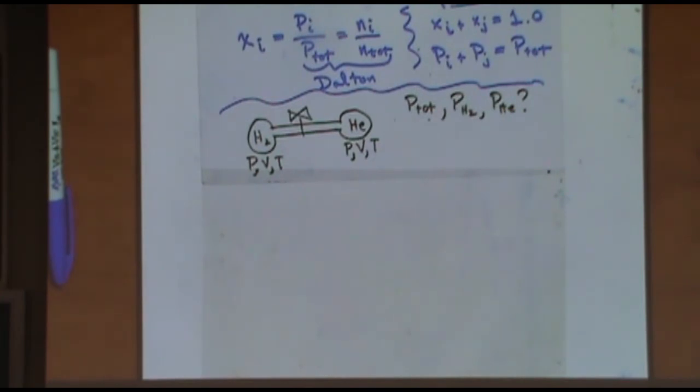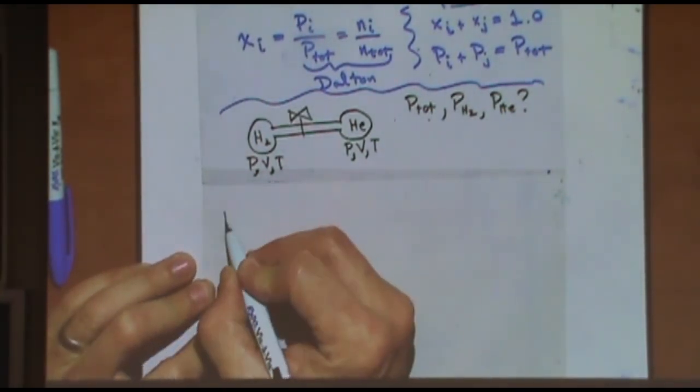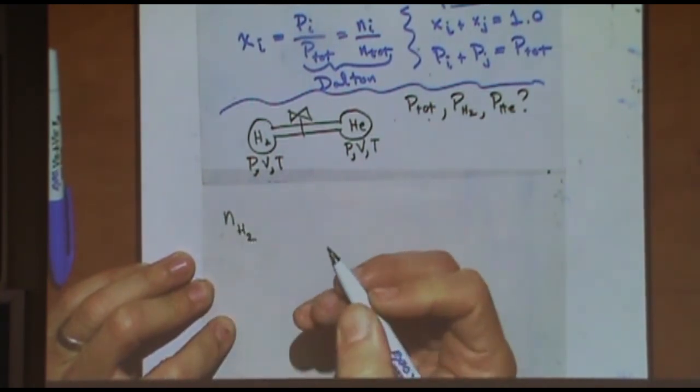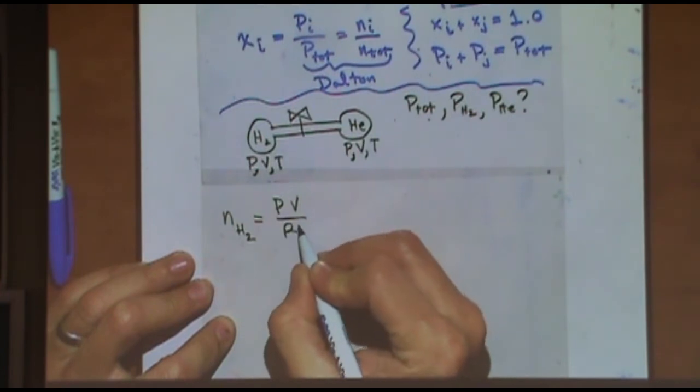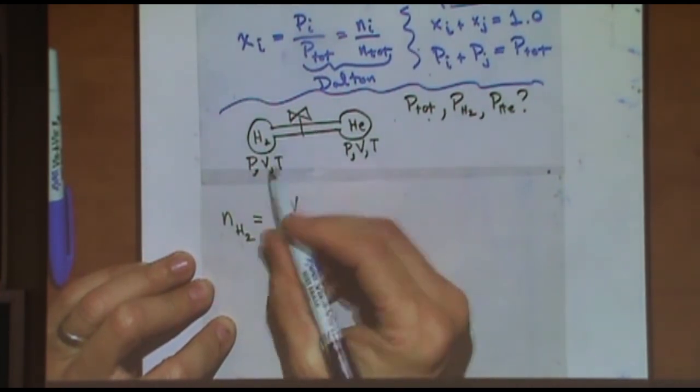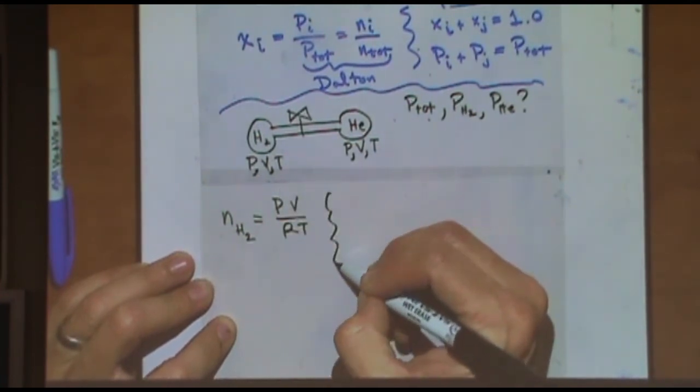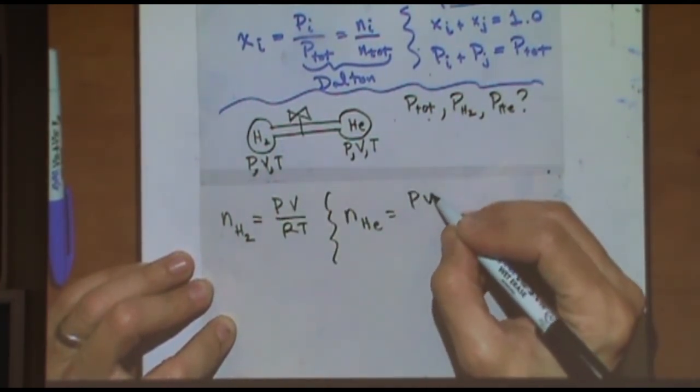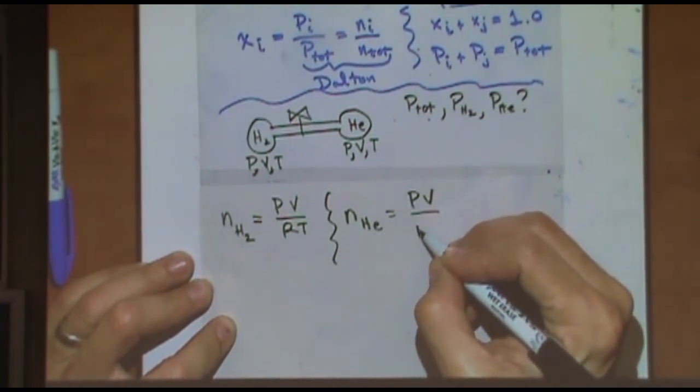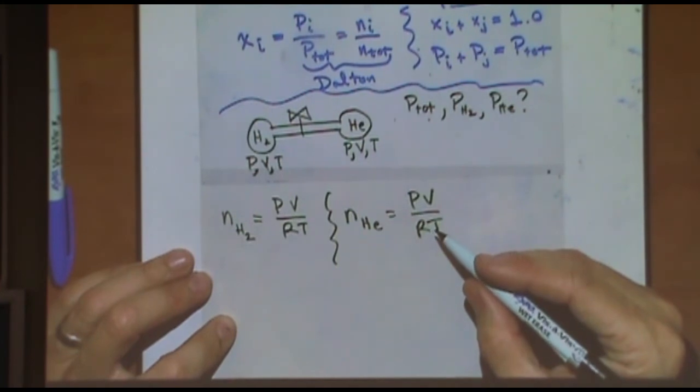In this case, it's the harder example, where you're given pressure, volume, and temperature. In that case, if you want to find the moles of H2, you would have to go PV over RT. Just make sure to use all the hydrogen numbers to do that one. For helium, you do the same thing. PV over RT. Just make sure to use the helium numbers for this one.